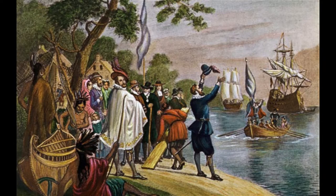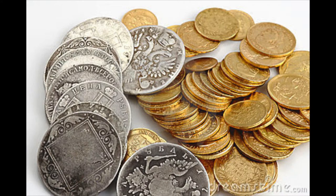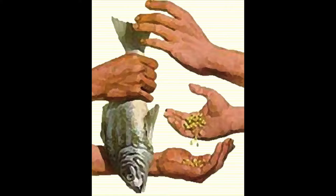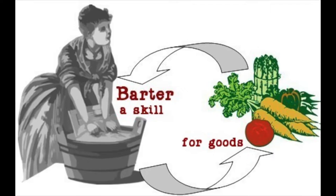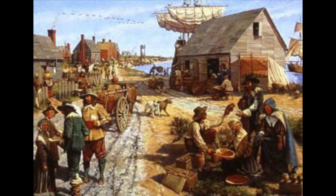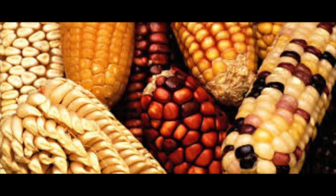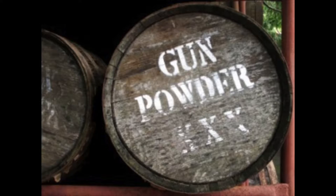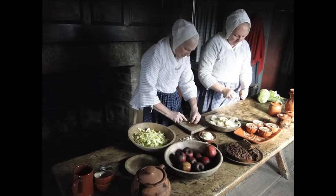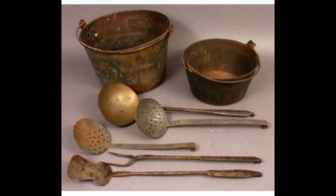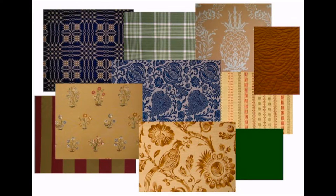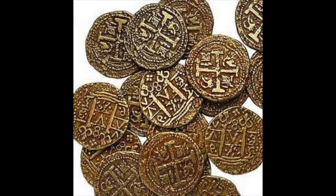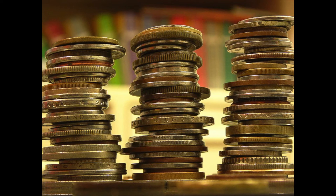Early British colonists had little to no British currency or coins to use for trade, so they were forced to barter, which is a form of trade for goods and services without the use of currency as an intermediary device. In the case of the colonists, they traded such things as beaver skins, corn, tobacco, rice, livestock, and gunpowder in exchange for everyday goods like food, kitchen utensils, or farm equipment. However, this was a very unpopular form of trade amongst the colonists and they much preferred to use coins or other precious metals specie, which made trade much easier.